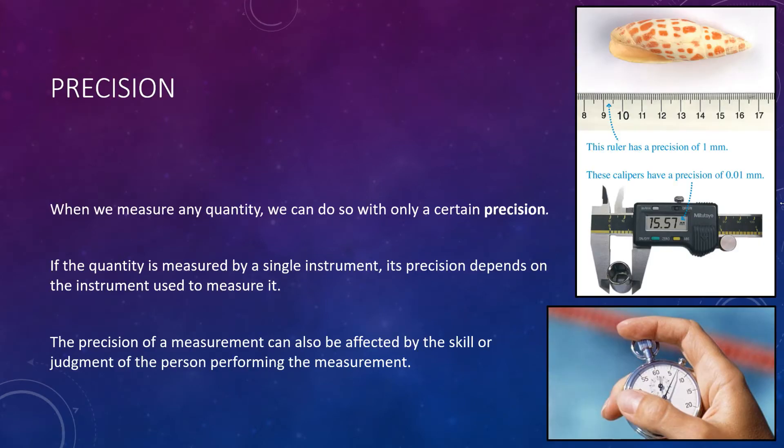When we measure any quantity, we can do so only with a certain precision. If the quantity is measured by a single instrument, its precision depends on the instrument used to measure it. If you make a measurement with a ruler, for example, as we have on the top right, you probably can't be more accurate than plus or minus 1 millimeter, because the smallest divisions on a ruler such as the one shown is a millimeter. So you might be able to guess how far in between each little line it is, but you don't know for sure.